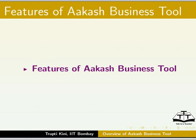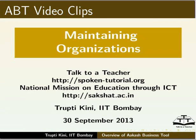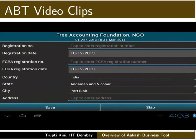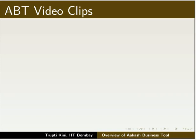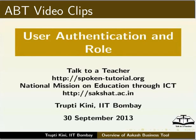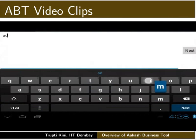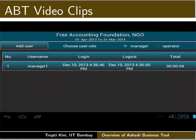Now let us look at some of the features of ABT. On the first page we can see two buttons at the top: Create new organization and Select existing organization. On the next page we have to fill organization details. Fill the organization details if required or tap on the skip button. Now let us see a small clip about user authentication and its role in an organization. We will select role as admin and login with our username and password. We can now view the login, logout and total time of manager and operator.